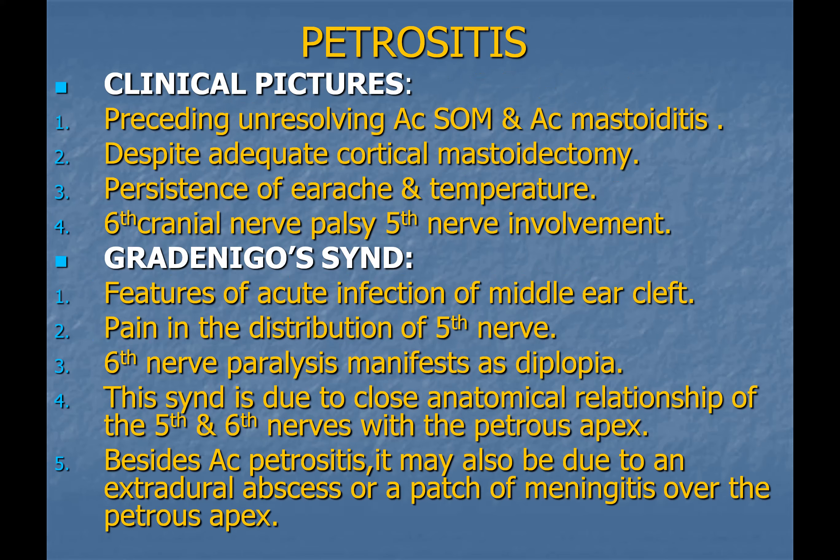The second complication is petrositis. If infection spreads to the petrous part of the temporal bone, the patient develops petrositis, presenting with lateral rectus palsy due to involvement of the sixth nerve, deep-seated ear or retro-orbital pain, and persistent ear discharge. This triad is called Gradenigo's syndrome. In an exam scenario, if a patient has diplopia on lateral gaze, deep ear or retro-orbital pain, and persistent ear discharge, this means the patient has developed petrositis.